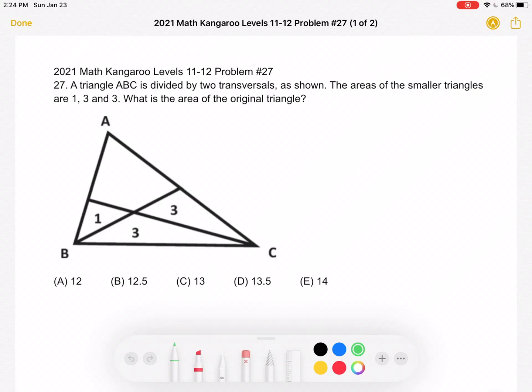This is the 2021 Math Kangaroo Levels 11-12, problem number 27. A triangle ABC is divided by two transversals as shown.